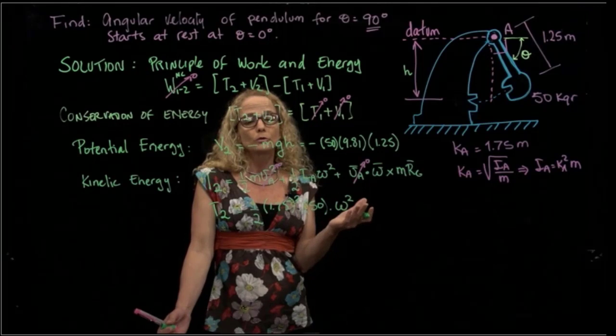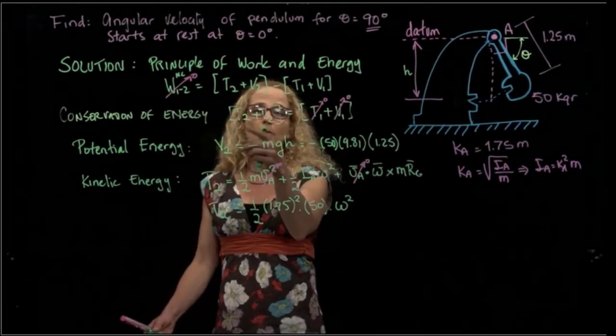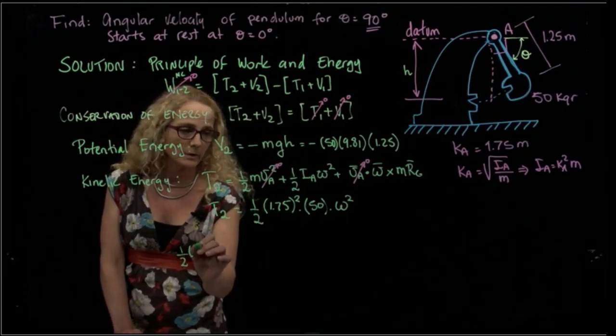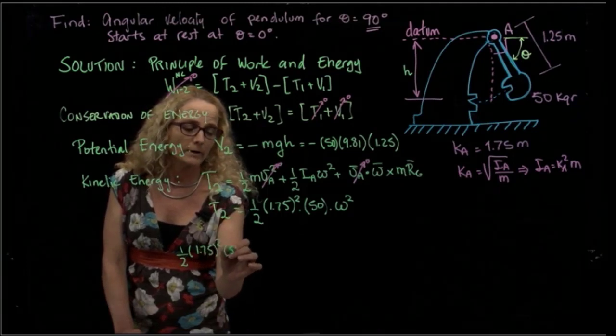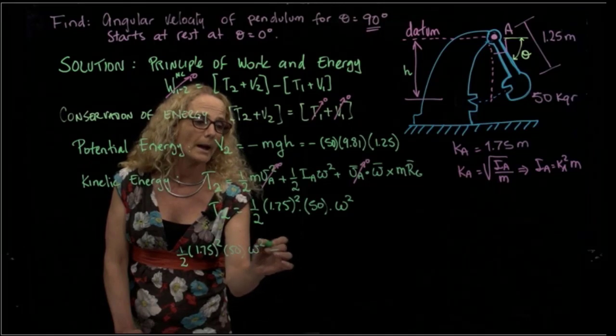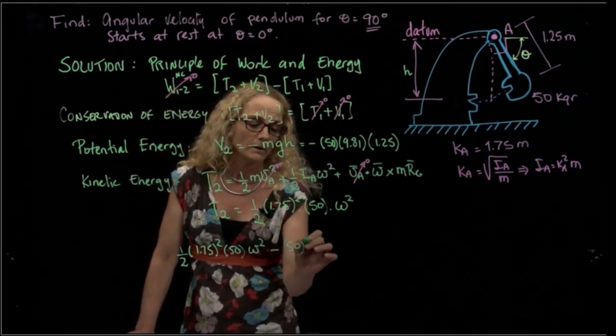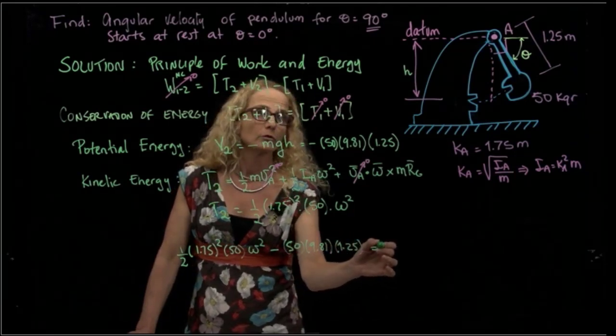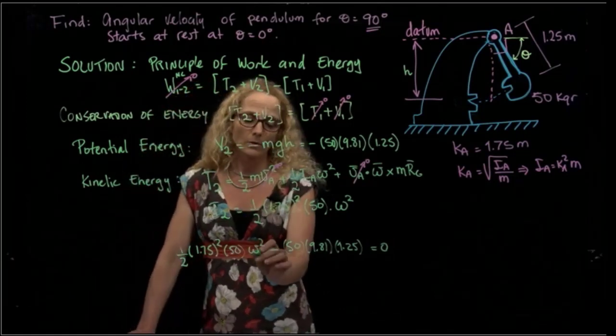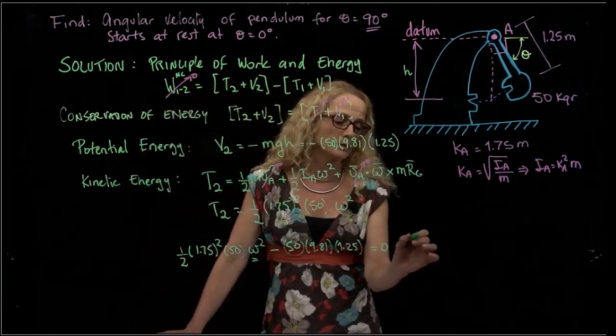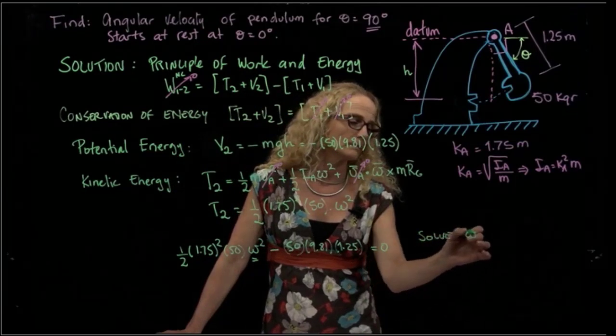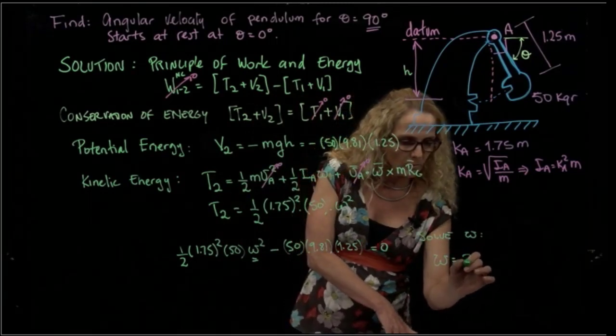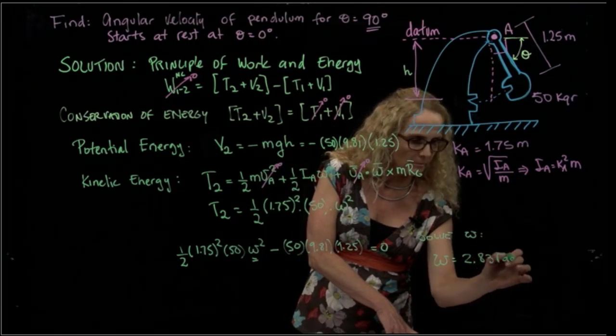At the end, we have only two terms, and we plug it into our conservation of energy equation. And then we have that one-half times 1.75 squared times 50 times angular velocity squared minus 50 times gravity times 1.25 equals zero. And from here, the only unknown is angular velocity, so we solve for angular velocity, and we get that our angular velocity is equal to 2.83 radians per second.